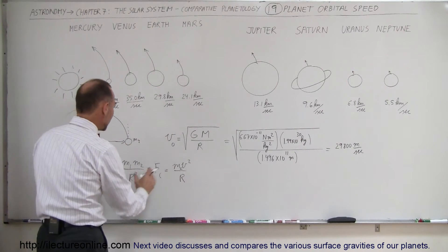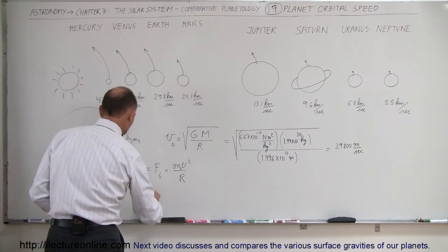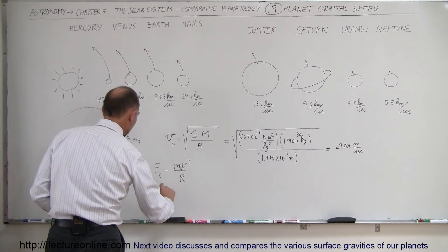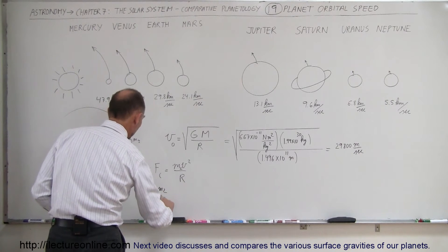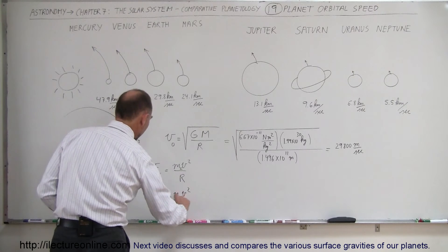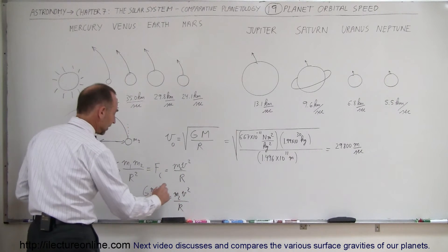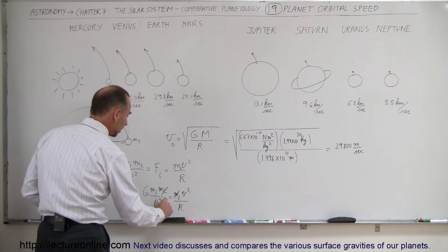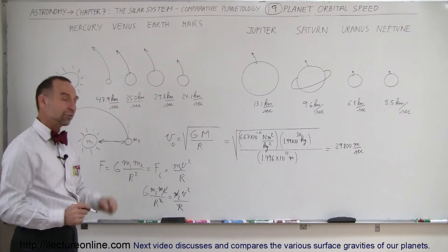Then, you can see if we set those two equal to each other, we can see that g times m1, m2 divided by R squared is equal to m2, v squared divided by R. Notice that the m2s cancel out, one of the R's cancel out, and if we solve this for v,